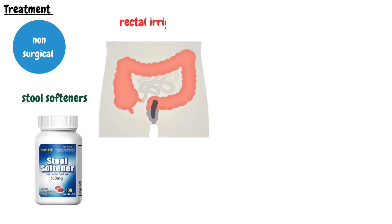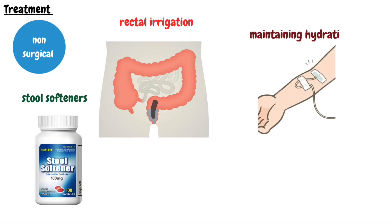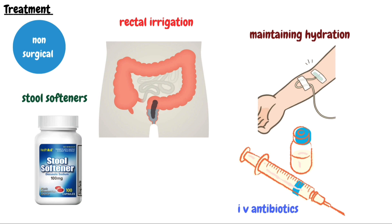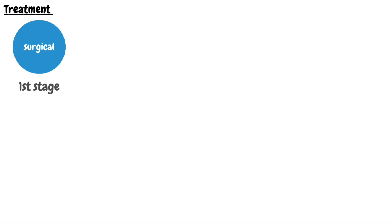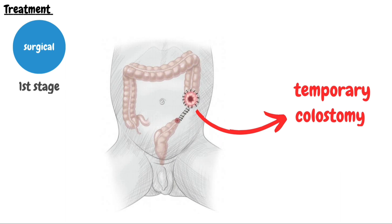Now we will talk about the treatment of Hirschsprung's disease, which involves non-surgical as well as surgical management. Non-surgical management involves relieving chronic constipation with stool softeners, as well as rectal irrigation with normal saline. Hydration is maintained by IV fluids and electrolytes. IV antibiotics are sometimes given to limit the risk of infection. Surgical management is the mainstay of treatment. The surgery is performed as a two-stage procedure. In the first stage, a temporary colostomy is done above the transition zone of ganglionic and aganglionic bowel.